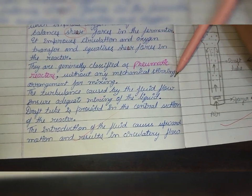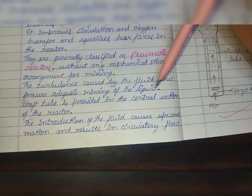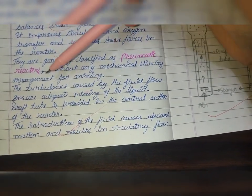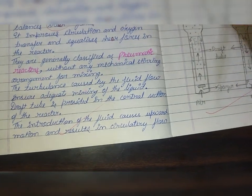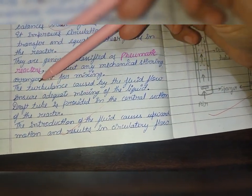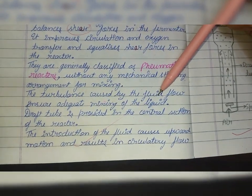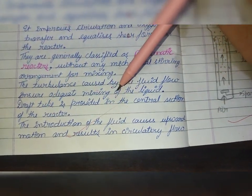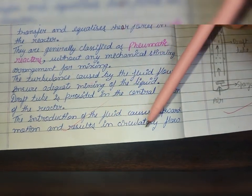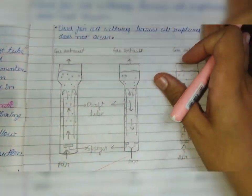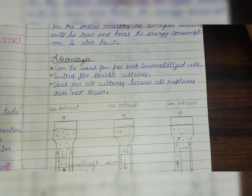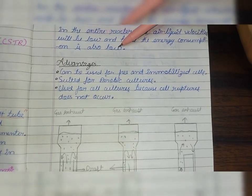The turbulence caused by the fluid flow ensures the adequate mixing of the liquid. When there is no arrangement of mechanical stirring, the turbulence created by the fluid helps in mixing of the liquid. This draft tube is provided in the central section of the reactor and the introduction of the fluid causes upward motion, which results in circulatory flow in the entire reactor. The air-liquid velocities are low and hence the energy consumption is also low.